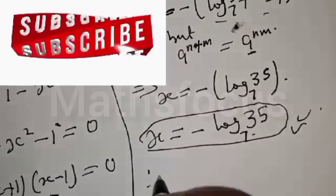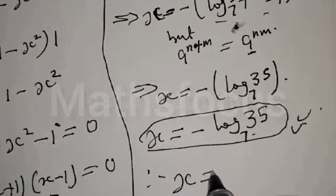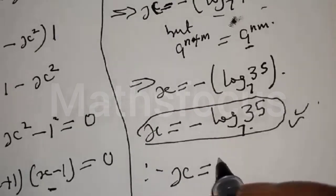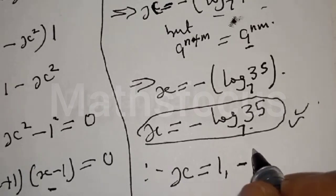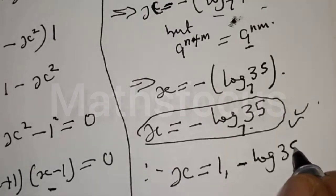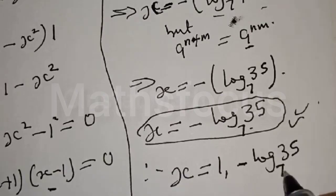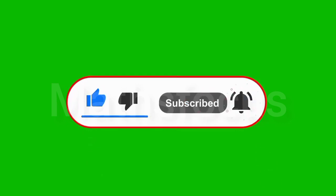Therefore the corresponding values of x are: x is equal to 1 or x is equal to minus log base 7 of 35.